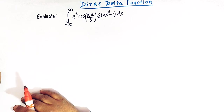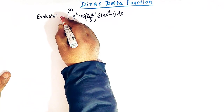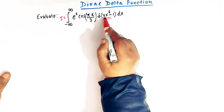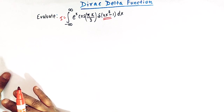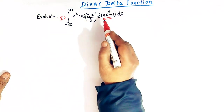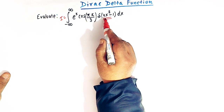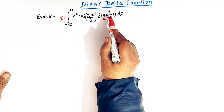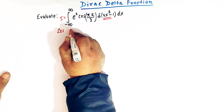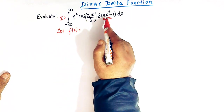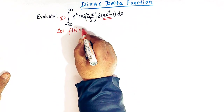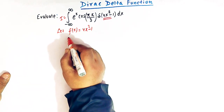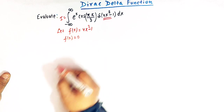We will go step by step. Let us first take this integral as I. Whenever we come across Dirac delta function integrals in which the argument is a function, the first step is to take that function — here 4x² minus 1 — as f(x). So we have f(x) = 4x² minus 1. The next step is to solve the equation f(x) = 0.